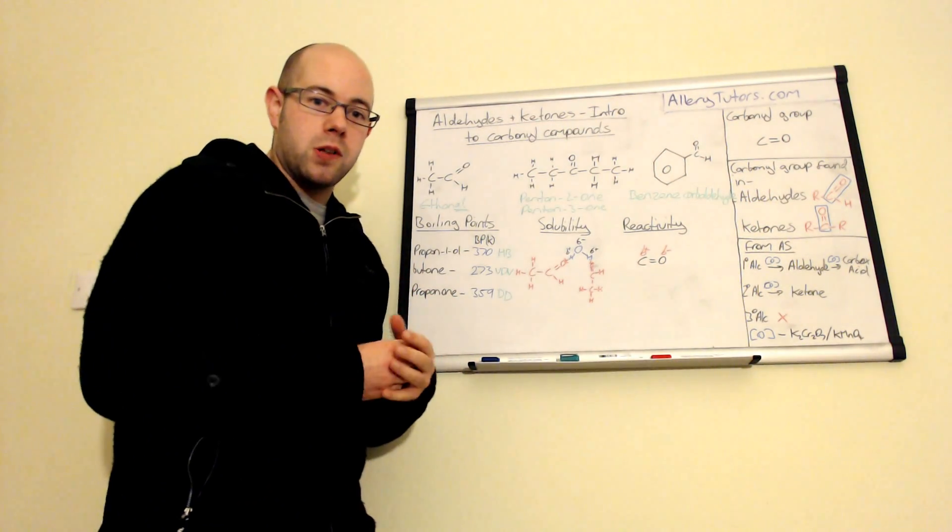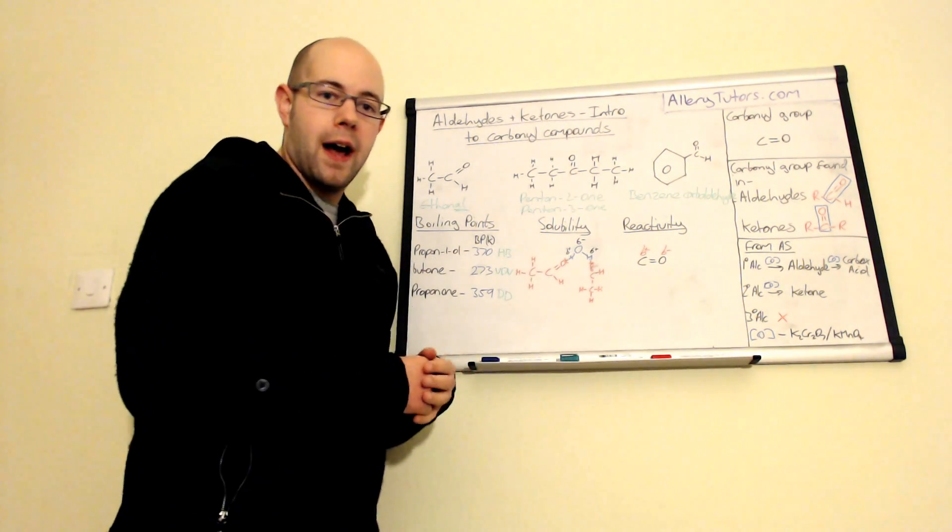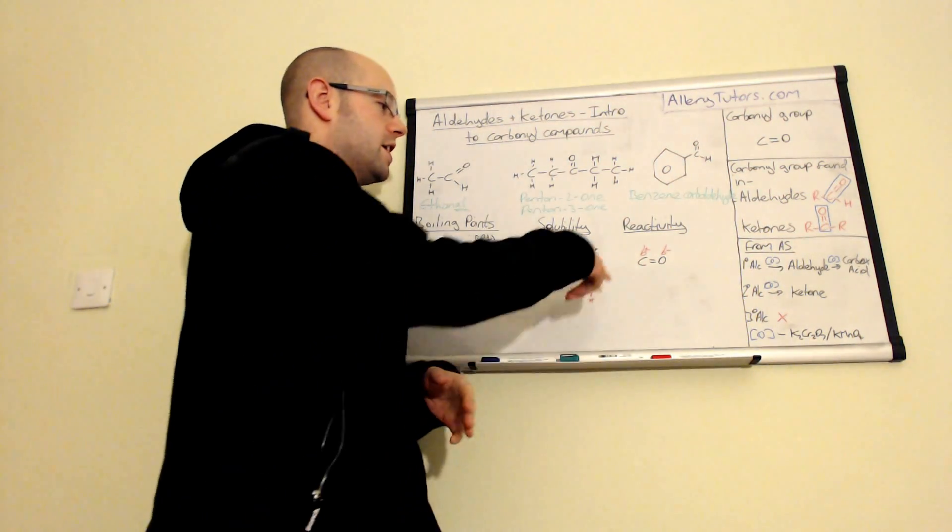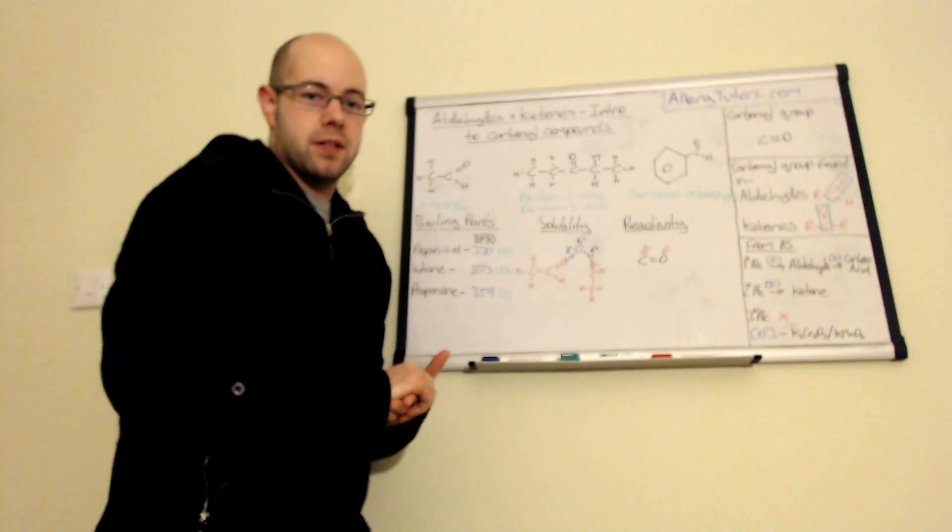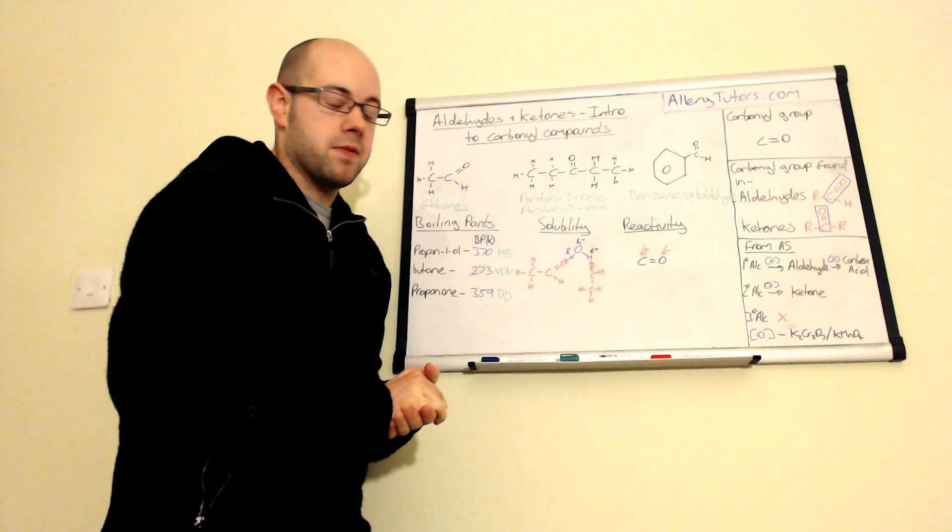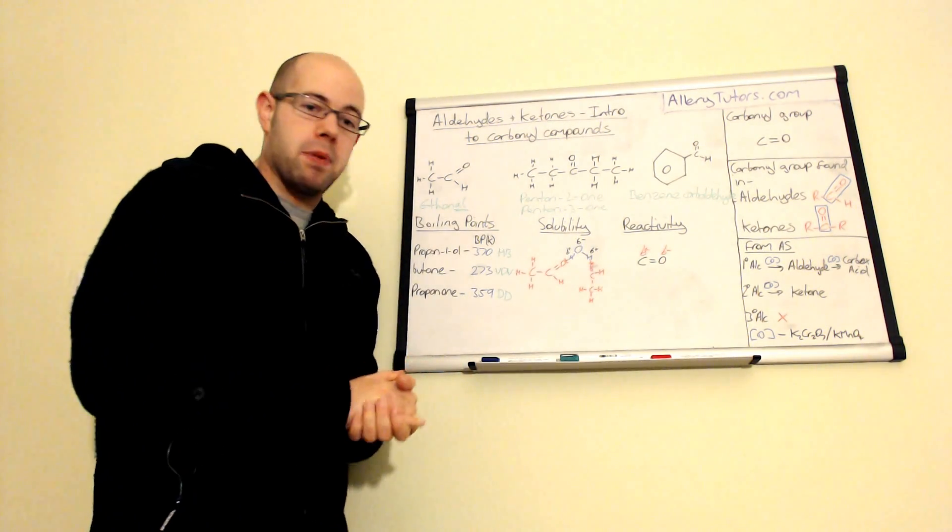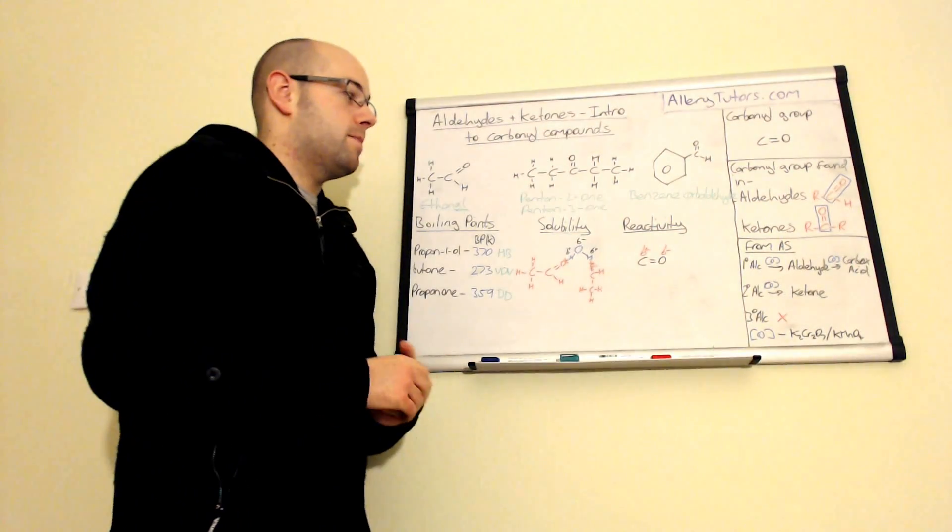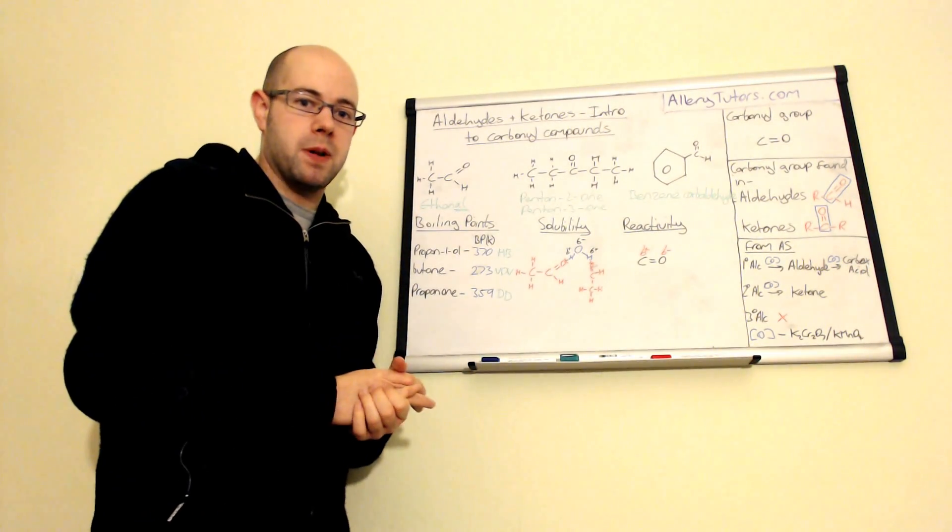What that means is our delta positive carbon is susceptible to nucleophiles. These are molecules with a lone pair of electrons, such as ammonia, water, alcohol, anything like that. They can go in and react with that delta positive carbon and add onto there, because this double bond can break and allow something to add onto it. They are actually reasonably reactive, and it is important that you need to know and explain why they're reactive because of that polarity there.